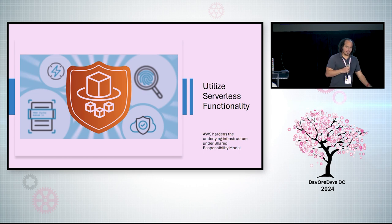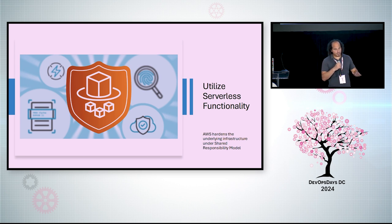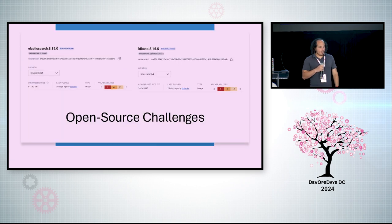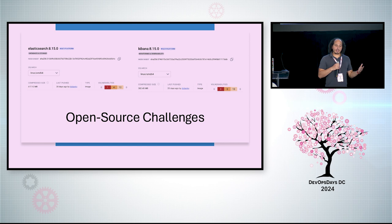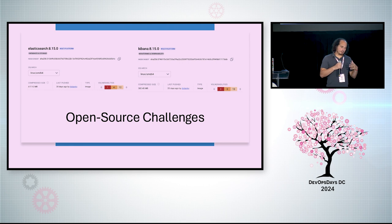Serverless is great because with the shared responsibility model, AWS is responsible for hardening the underlying infrastructure, and we can focus on container image development. However, we do use a lot of open source, and with open source you have new challenges — you can see here these tools contain a good amount of CVEs.